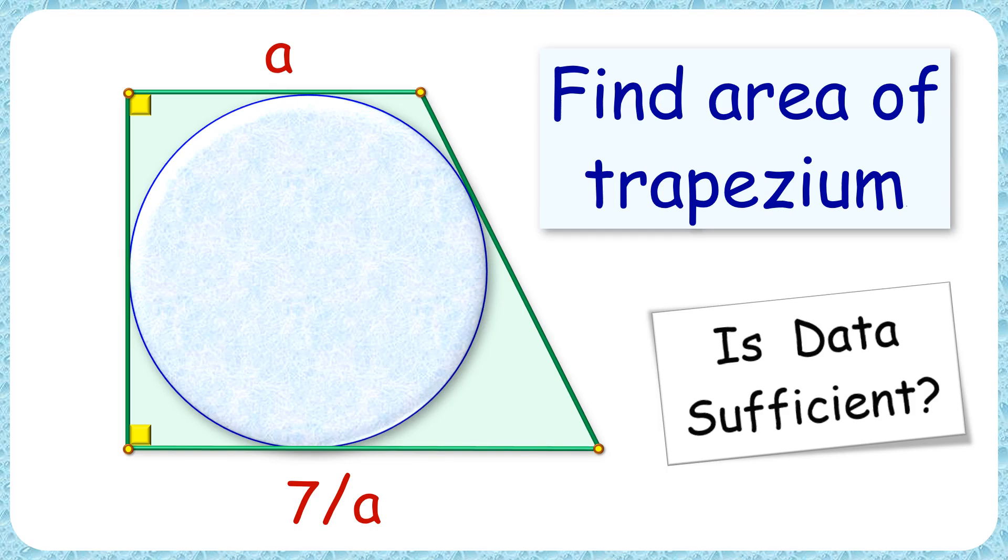Welcome to this interesting question. Given to us is a right angle trapezium with length of parallel sides as a and 7/a centimeters. We have a circle inscribed in the trapezium. The exciting part is, with this very limited data, we have to find the area of trapezium in absolute terms.